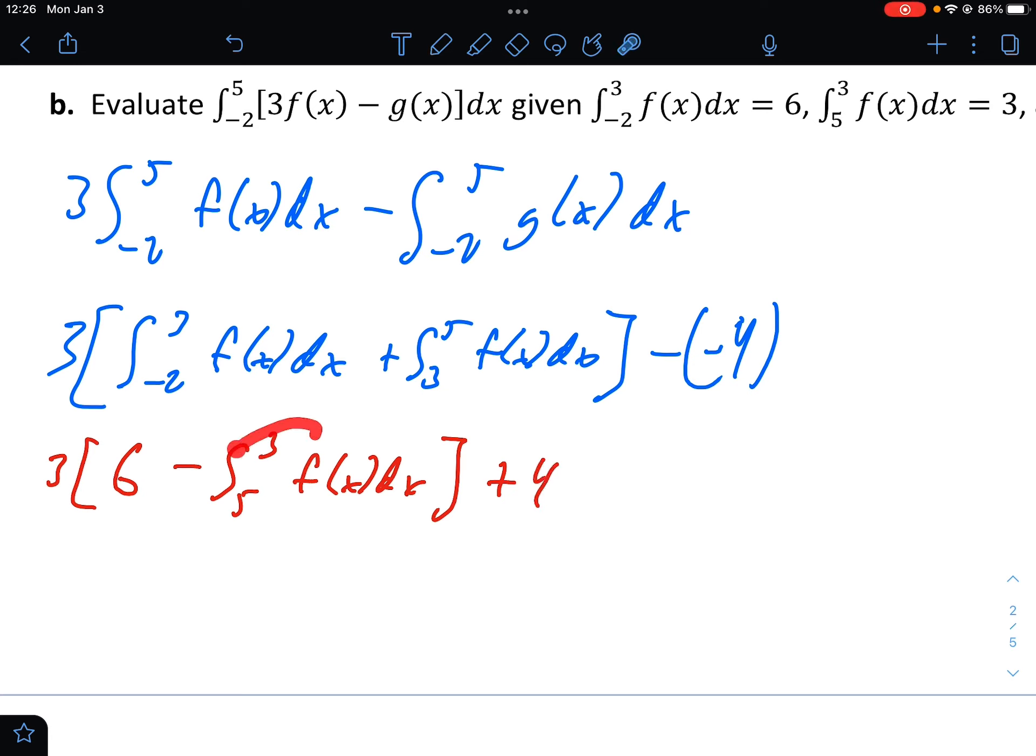We do know this is 6, so I can replace that with 6. But we don't know the integral from 3 to 5. We do know the integral from 5 to 3, so we can change the sign here, make this minus the integral from 5 to 3 of f of x dx, and over here we have plus 4. So finally, we get 3 times 6 minus 3 plus 4, which is 3 times 3 plus 4, which is 13.